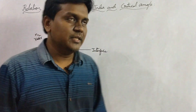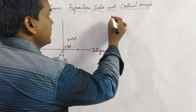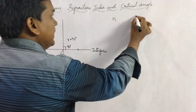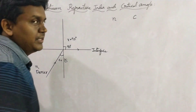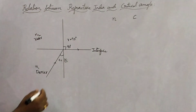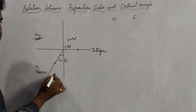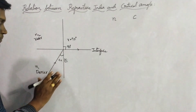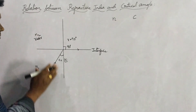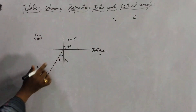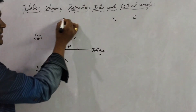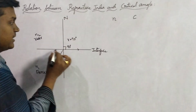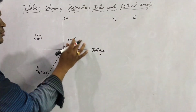Refractive index is indicated with the letter N and the critical angle is indicated with the letter C. A light ray is travelling from one medium to another medium — this is the denser medium and this is the rarer medium, N1 and N2. This is the normal and this is the interface separating the two mediums.